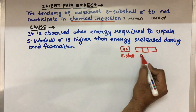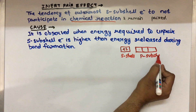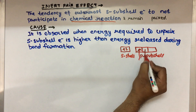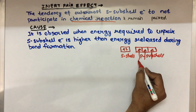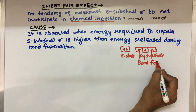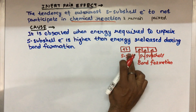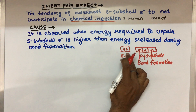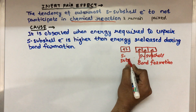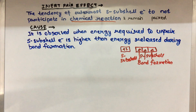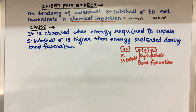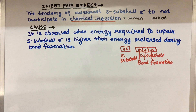If bond formation involves the p sub-shell electrons, and if the energy released is not enough — suppose s sub-shell electron unpairing energy is 100 kJ and the energy from p sub-shell bond formation is less — therefore, s sub-shell electrons do not participate.